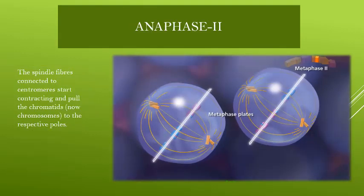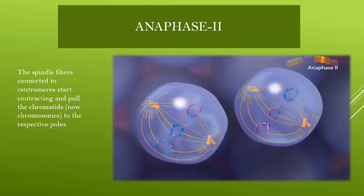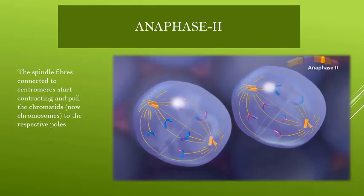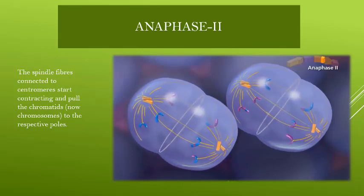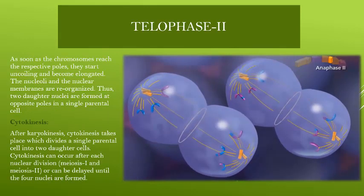In the next stage, Anaphase II, the spindle fibers contract and the sister chromatids move to their respective poles.